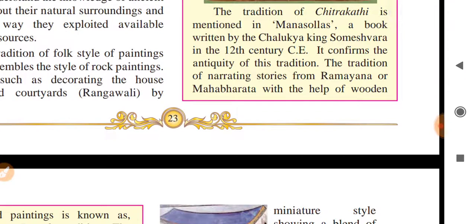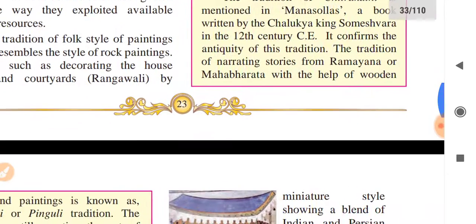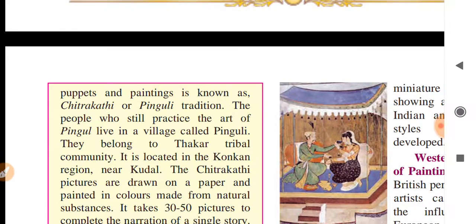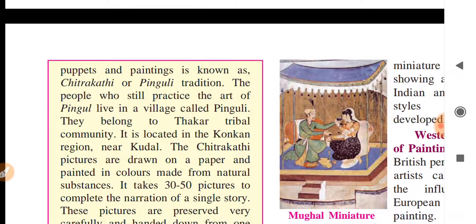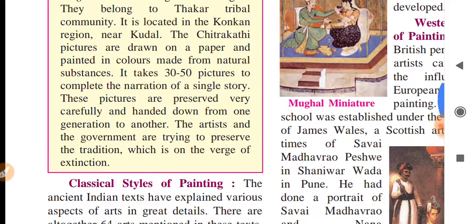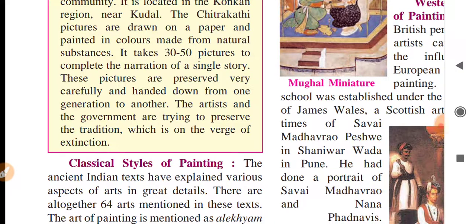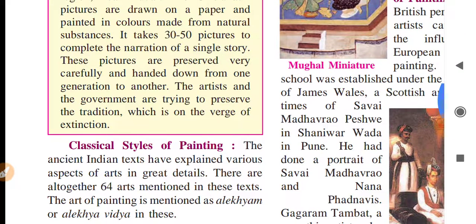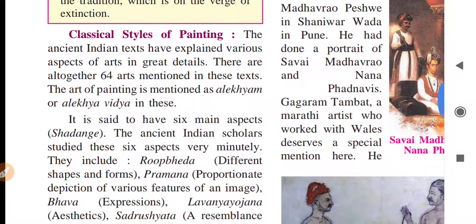In the Chitrakathi tradition, a story from the Ramayana or Mahabharata is taken and explained through wooden, paper puppets, and paintings. A short story of 10–20 minutes is narrated using drawings on 30–50 sheets of paper, which are carefully preserved and passed from generation to generation. The government is making great efforts to save Chitrakathi and similar traditions that are on the verge of extinction, so that future generations also know how stylistic our ancestors' paintings were.